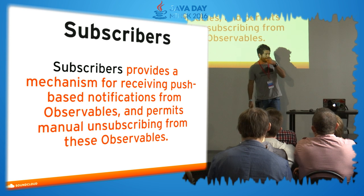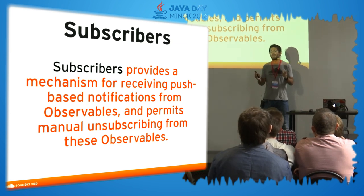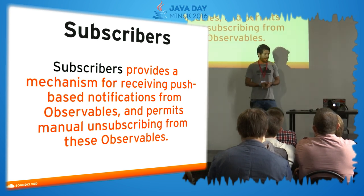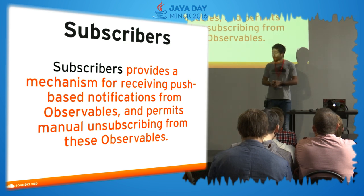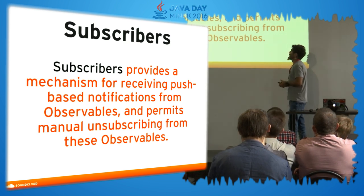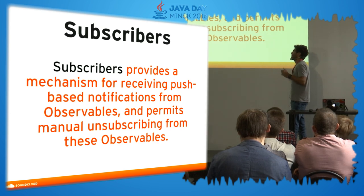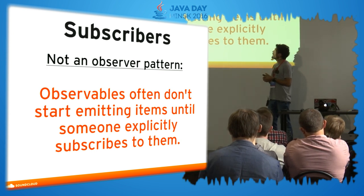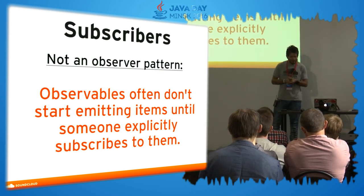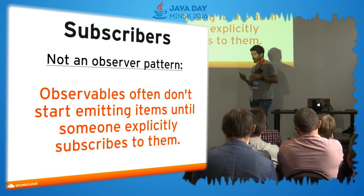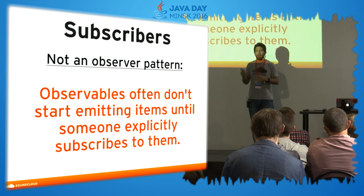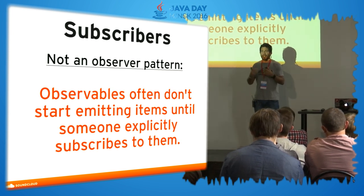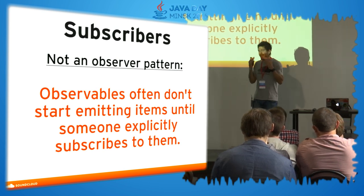Subscribers — the subscriber is the one who receives all those push notifications coming from the observable. There are two types of observables. The first is a cold observable: the observable is not going to start emitting any items until it has someone listening to it. Then we have hot observables, which are constantly emitting, and whoever subscribes gets all the data. From my experience, I haven't seen hot observables extensively used on Android.